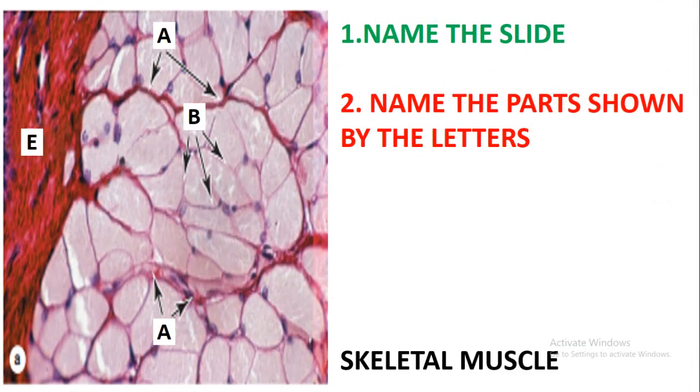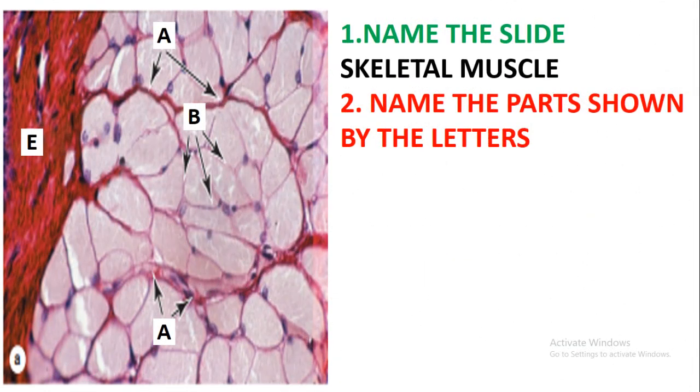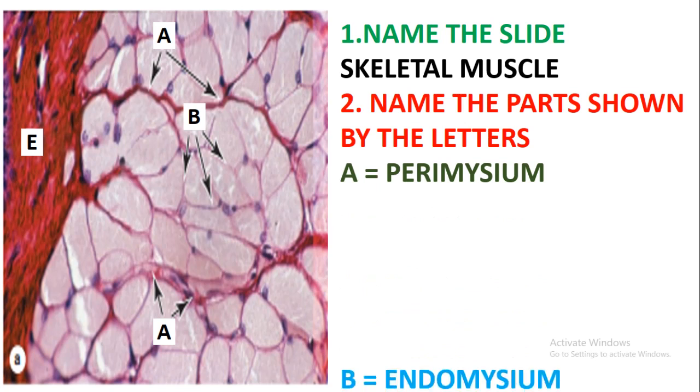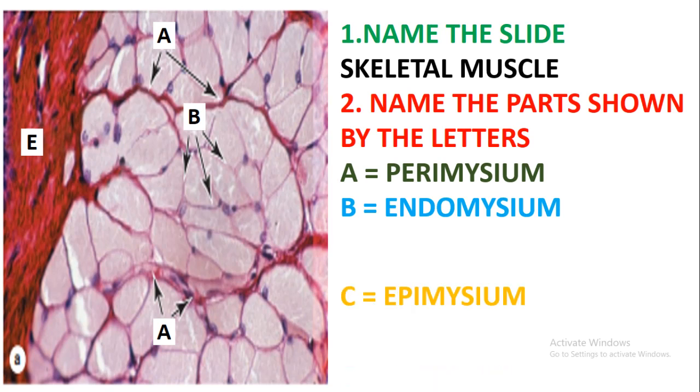Let's move on and look at this slide. This slide is the skeletal muscle. Name the portions shown by the letters. A is showing the perimysium, B is showing the endomysium, and E is showing the epimysium.